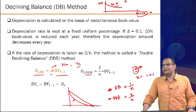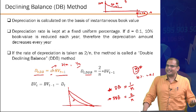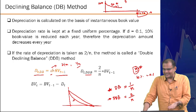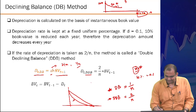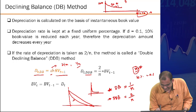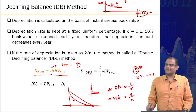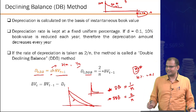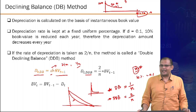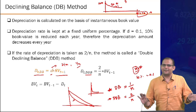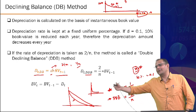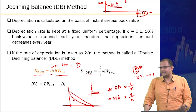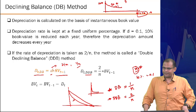One might wonder why not use triple or quadruple declining balance. Beyond double, the depreciation curve becomes impractically steep. The logic for stopping at double is not entirely clear, but that is the general formula used in practice.